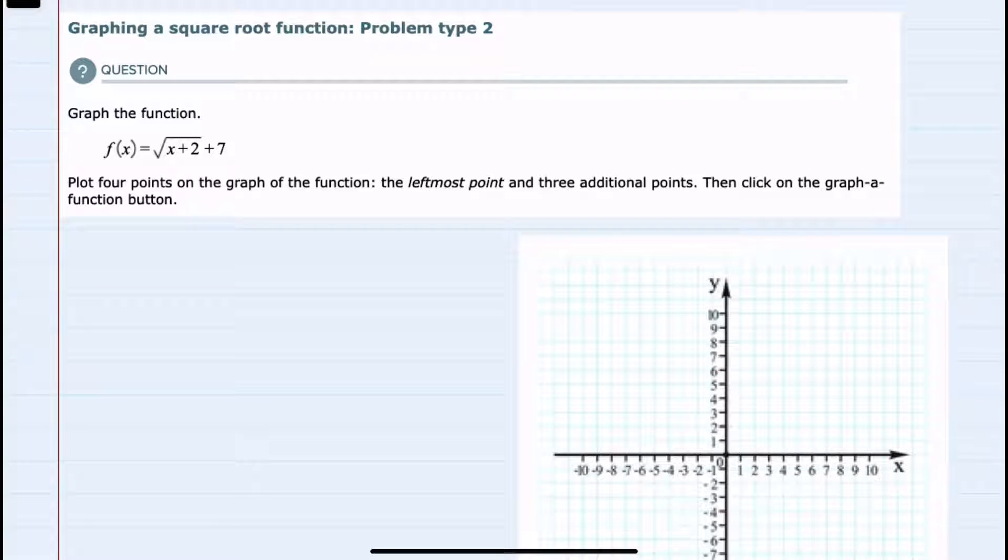In this video I'll be helping you with the Alex problem type called graphing a square root function, problem type 2. We're given the function f(x) equals the square root of x plus 2 plus 7.